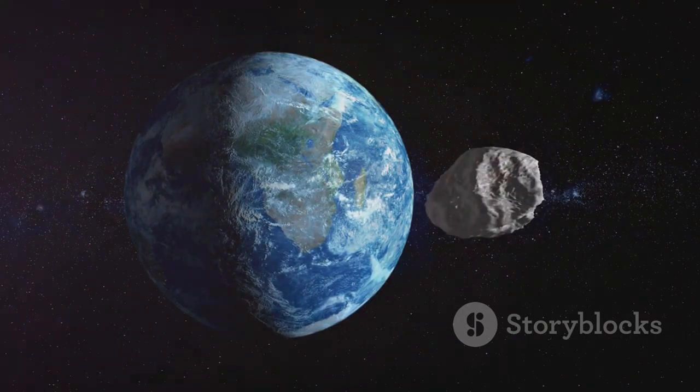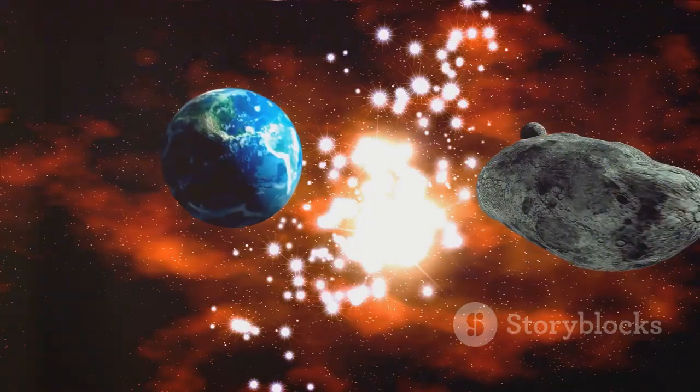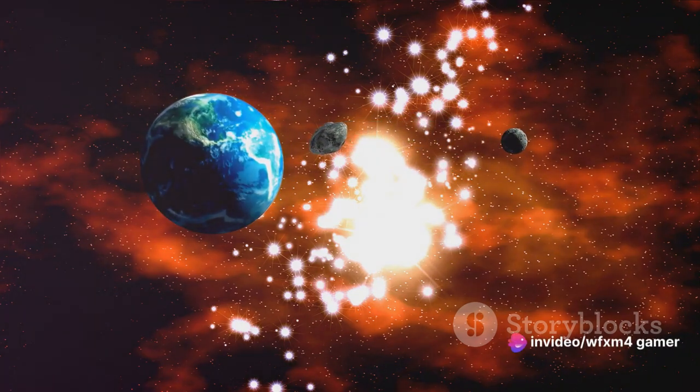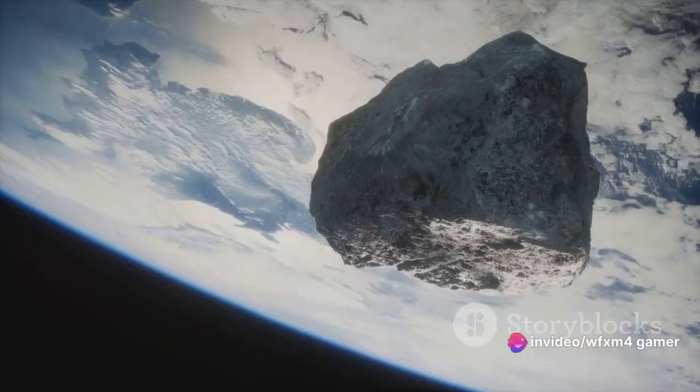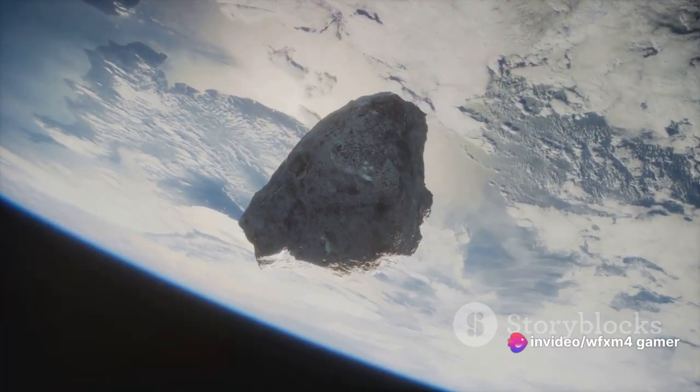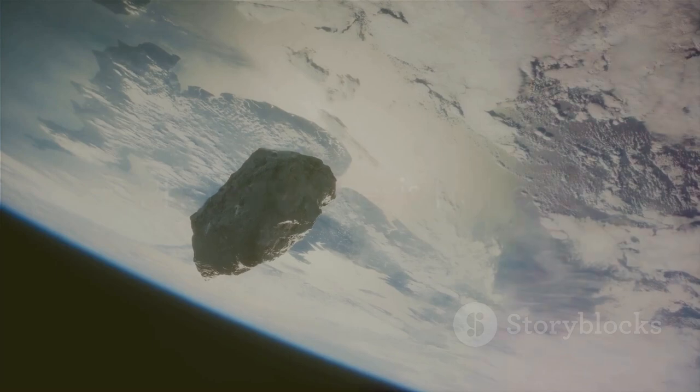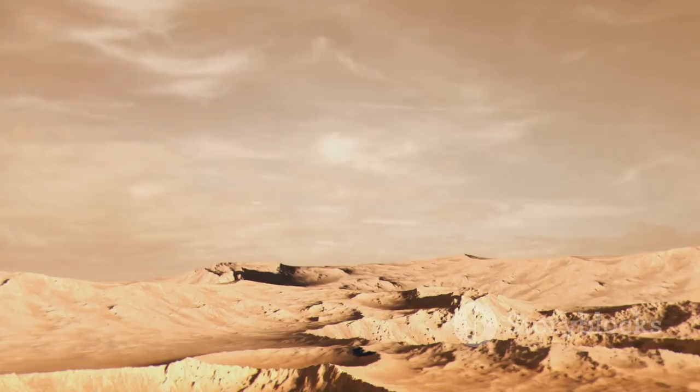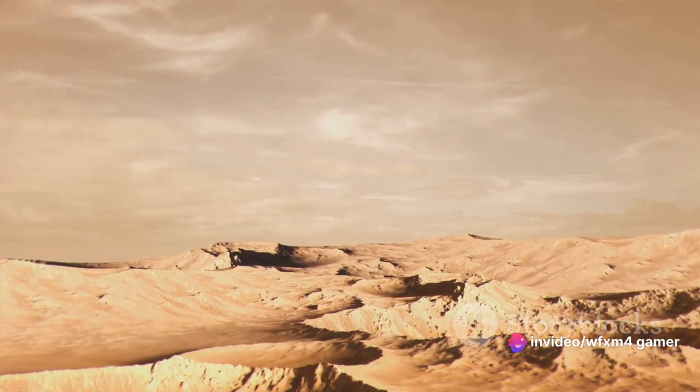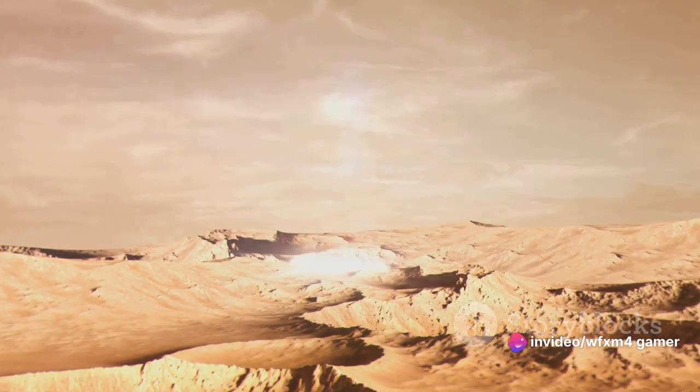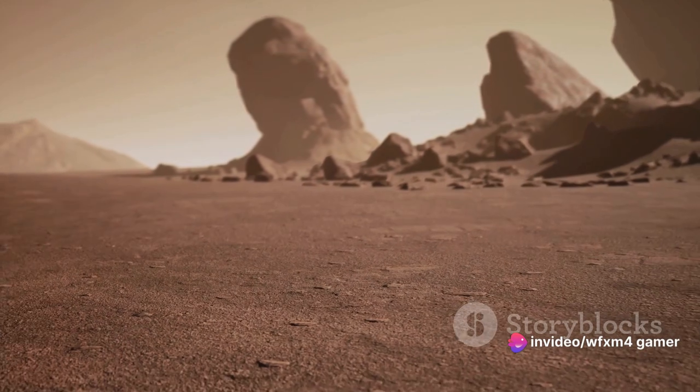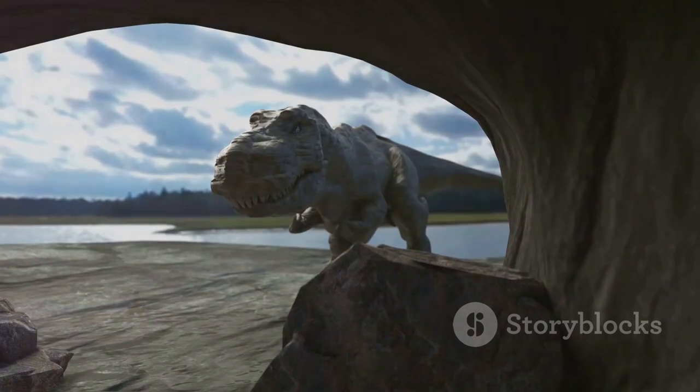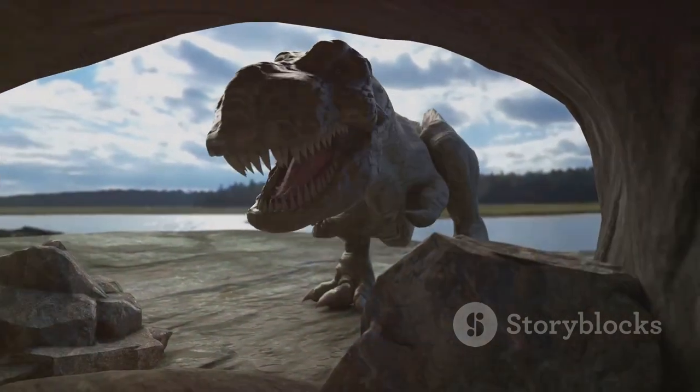Now, imagine the Earth in utter darkness. Sunlight, the life-giving force, is drastically reduced. This causes a significant drop in temperatures worldwide, creating an unending winter. The decrease in sunlight also means that photosynthesis, the process by which plants make food, comes to a halt. The once vibrant and green Earth now lies barren and cold. With the extinction of plant life, herbivorous dinosaurs, those that fed on plants, faced a severe food shortage. This collapse in the food chain didn't stop there.